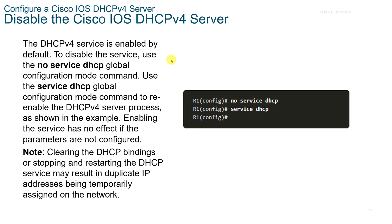We can also disable the Cisco IOS v4 server using the 'no service dhcp' global config mode command, and re-enable it with 'service dhcp'. Note that clearing the DHCP bindings or stopping and restarting the server may result in duplicate IP addresses being temporarily assigned on the network.